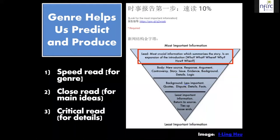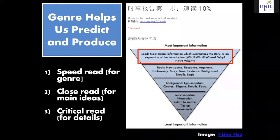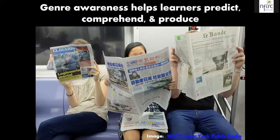Genre helps us to predict and produce. This is an example from one of our former institute participants. Yiling had her students make multiple passes through a print text for different purposes: first, quickly speed reading to figure out what genre this is — is this a newspaper article, an ad, a poem? Then going back through and close reading for main ideas, noticing that main ideas generally come at the top of the paragraph in a newspaper article. Then reading critically for specific individual details. So genre awareness helps learners to predict, comprehend, and produce.